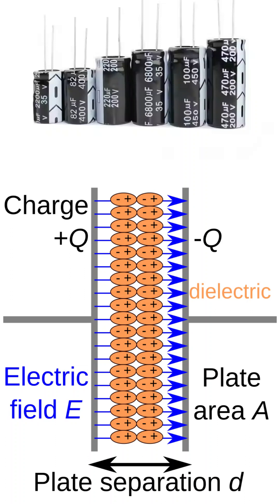This alignment of charges inside the dielectric creates an opposing electric field, which slightly reduces the overall electric field inside the capacitor.